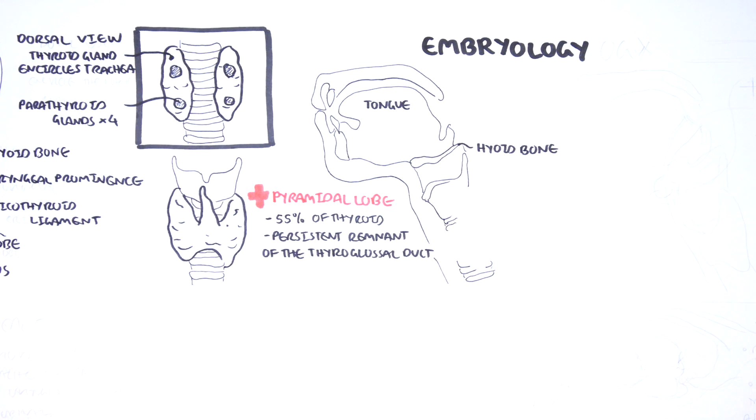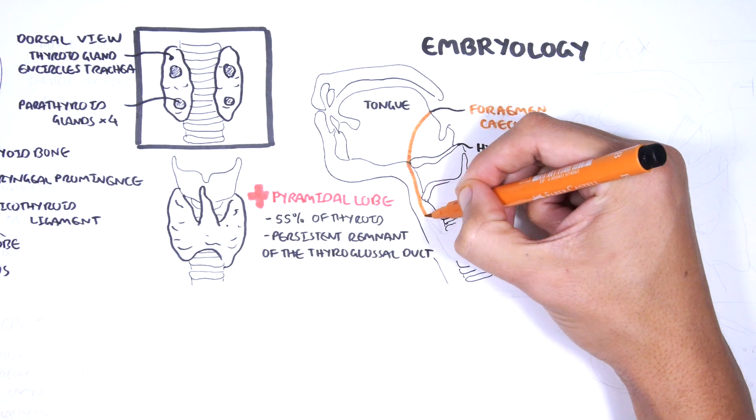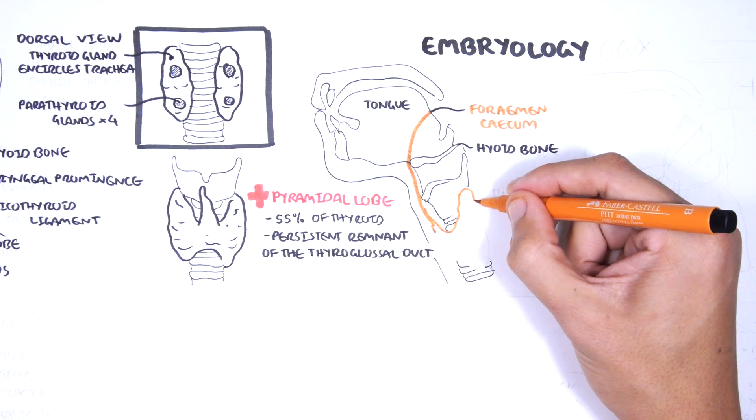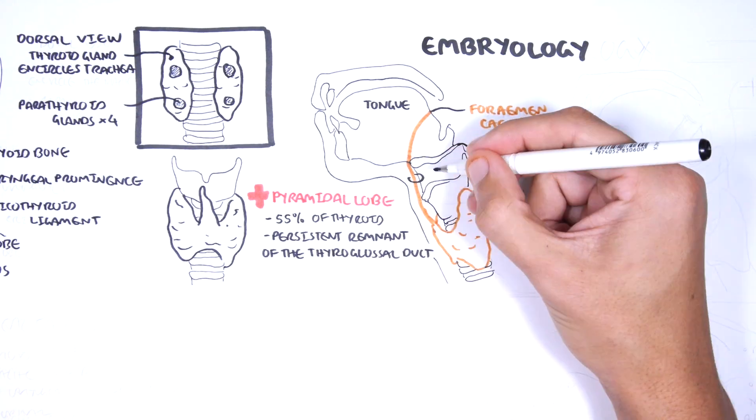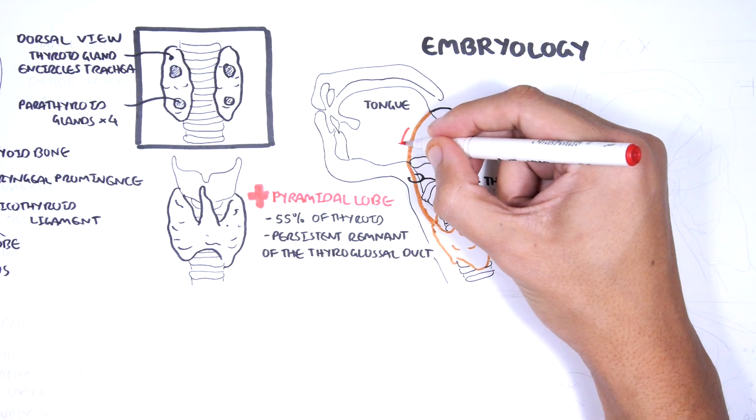Embryologically, the thyroid gland begins its development at the base of the tongue, a place called the foramen cecum. From here, it will descend down to the trachea, forming the thyroglossal duct which should atrophy with time.